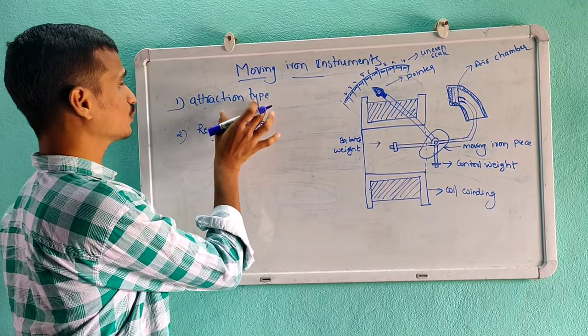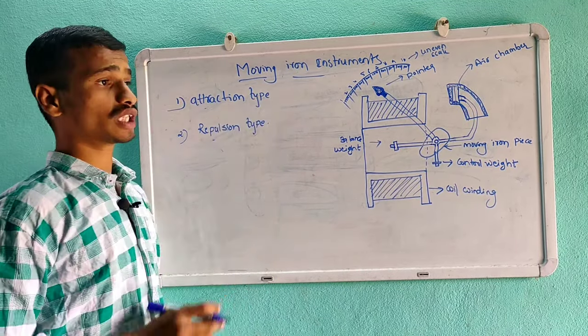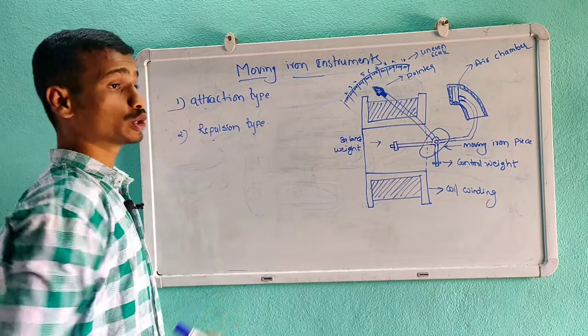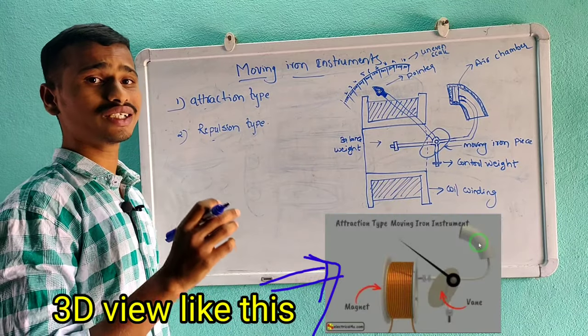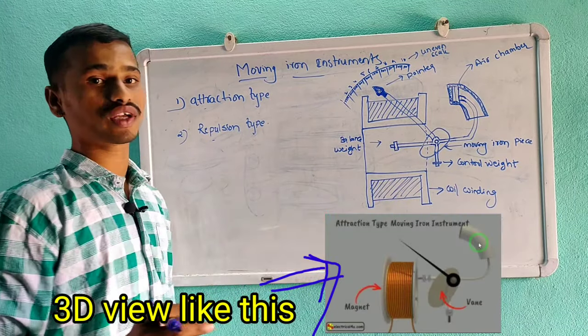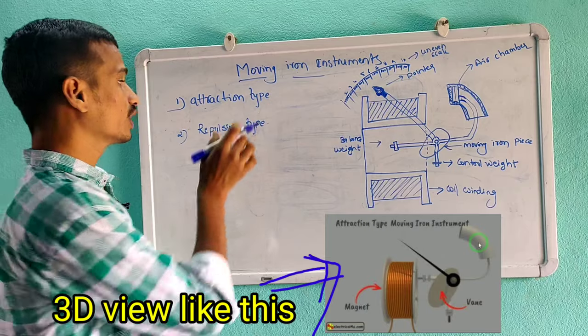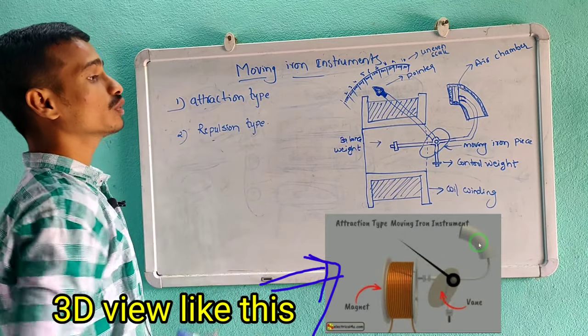First one: attraction type instruments. It works on the principle of attraction of a single soft iron piece into a magnetic field. This is about attraction type instruments.